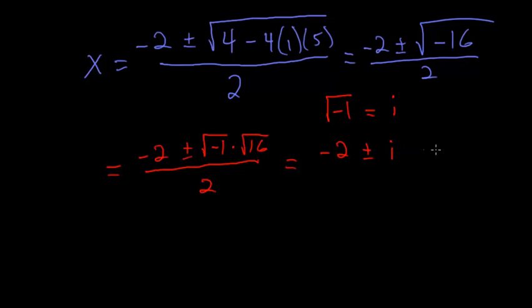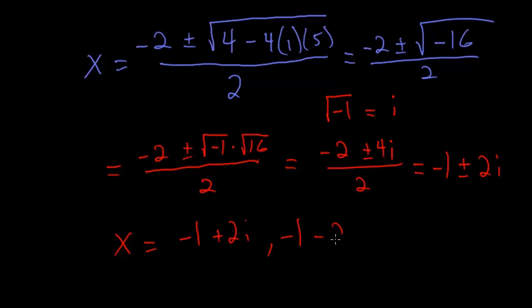Rewriting this, we have minus 2 plus or minus i times the square root of 16, which is 4. I'll write this in front, all divided by 2. Simplifying by dividing everything by 2, we have minus 1 plus or minus 2i. So our two solutions are x equals minus 1 plus 2i and x equals minus 1 minus 2i.